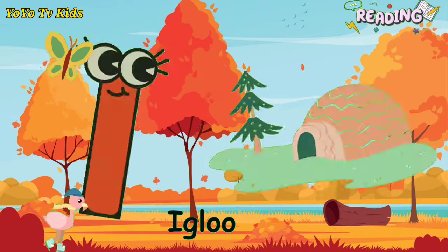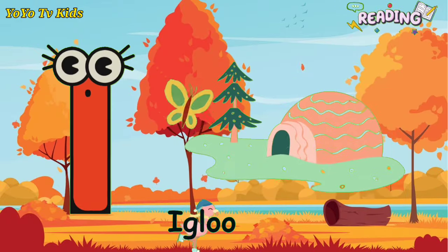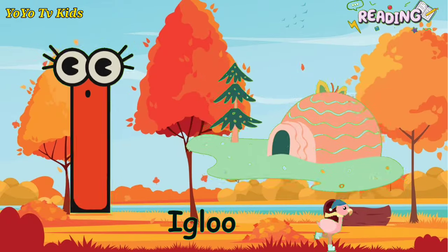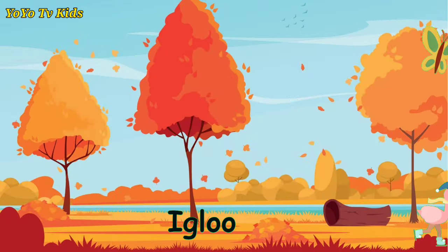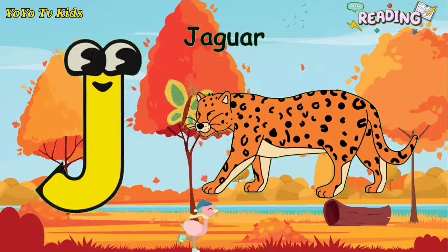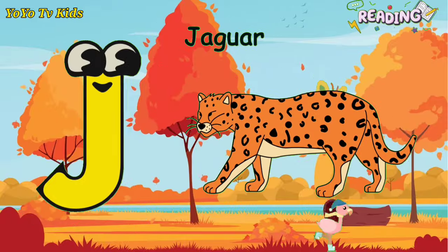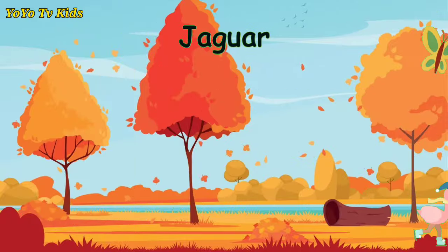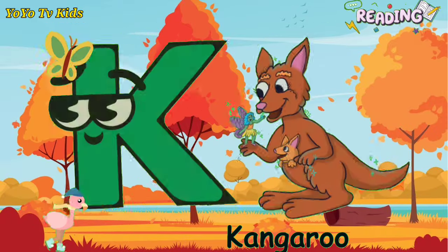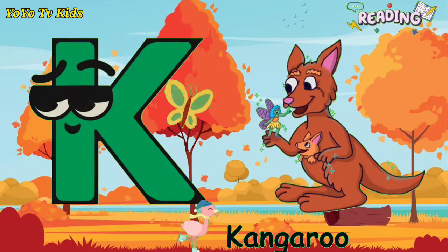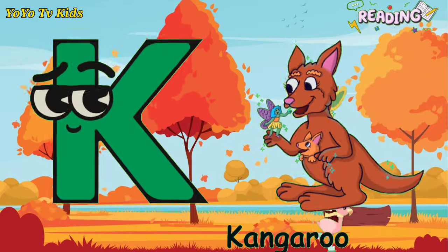I is for Igloo. I, I, Igloo. J is for Jaguar. J, J, J. K is for Kangaroo. K, K.